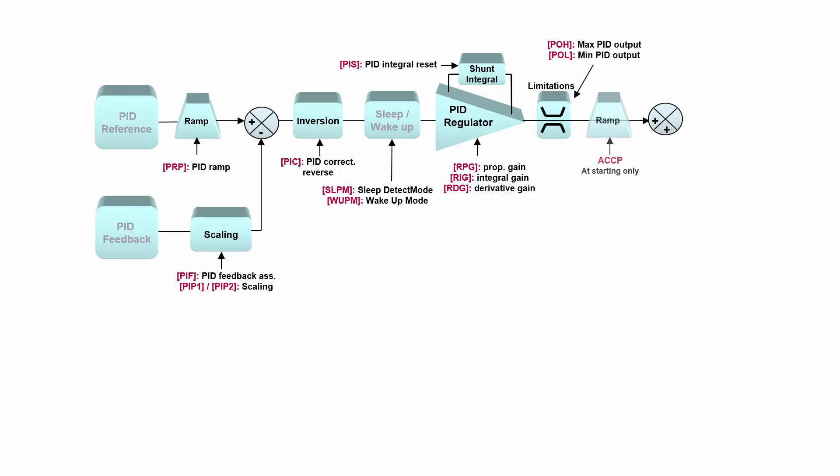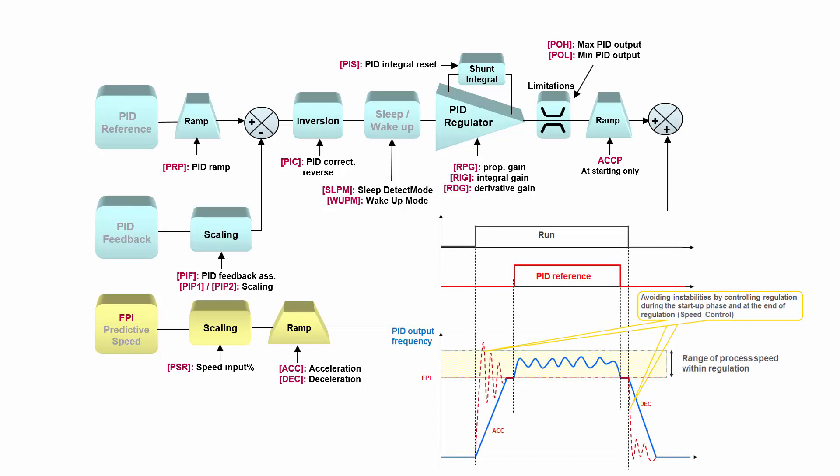Now the summing point is for predictive speed, which we can scale and ramp. Why do we use this predictive speed? We use it to avoid certain instabilities in our system, especially if we have a certain speed range where we can regulate. In between, we don't need PID regulator to work, but just ramp up and ramp down from this range.